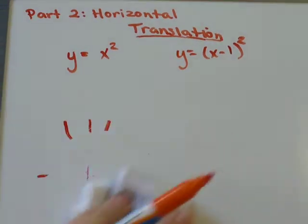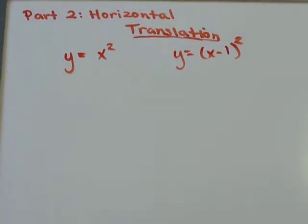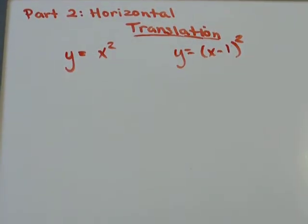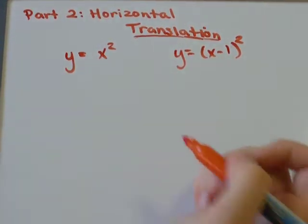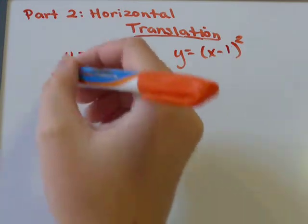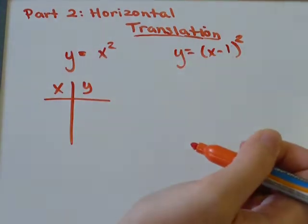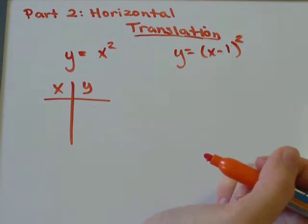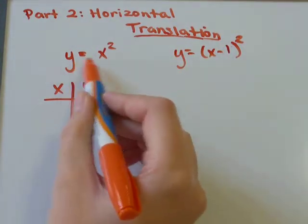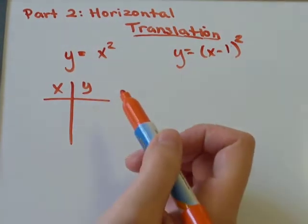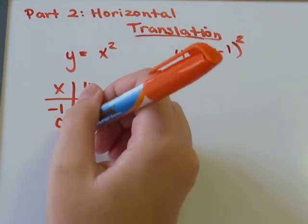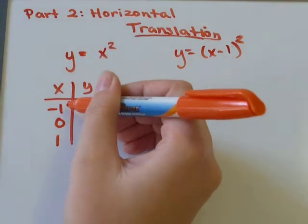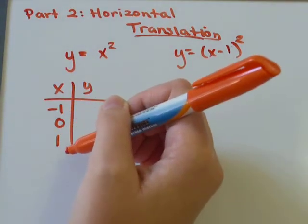So we're going to start with our graph y equals x squared. We're just going to see what it looks like to make an xy chart. I went over this in a lot of detail in part 1, vertical translations, on how to graph y equals x squared. So you can check that out if you need to. But I'm going to say x is negative 1, 0, and 1. Always good to have a negative point, get 0 in there and get a positive point.